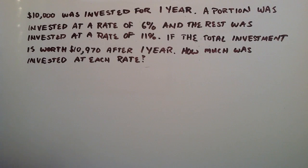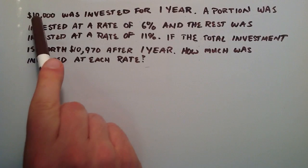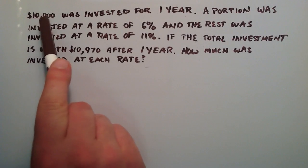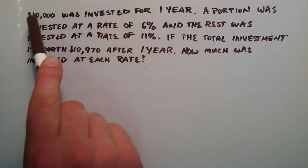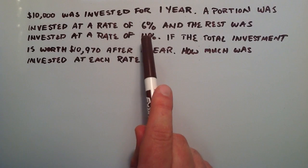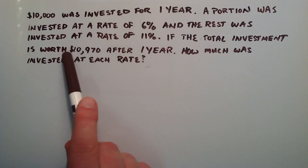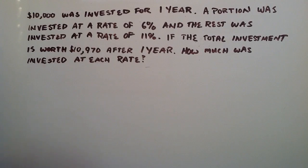So basically we're taking this $10,000 and we're going to invest a portion of it in 6% interest rate and we're going to invest the rest of it at the 11% rate. And at the end our total is going to be $10,970.